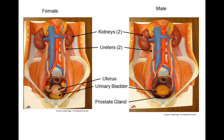We will now take a look at the major organs of the human urinary system. The urinary system is made up of two kidneys, two ureters, one urinary bladder, and one urethra.